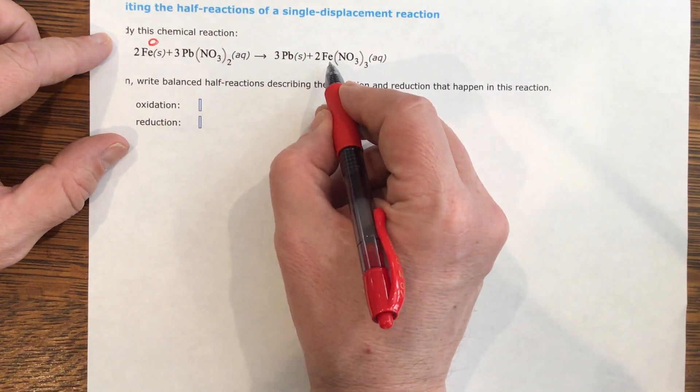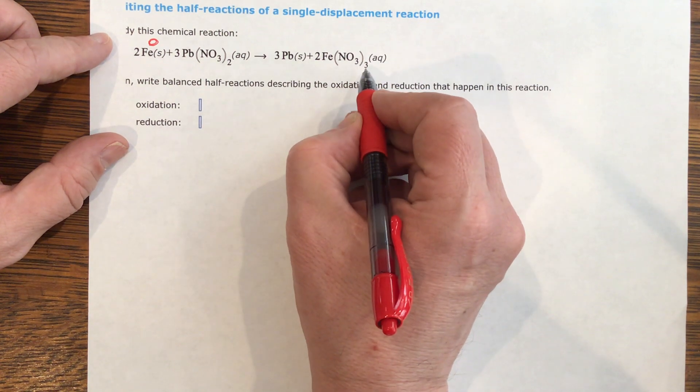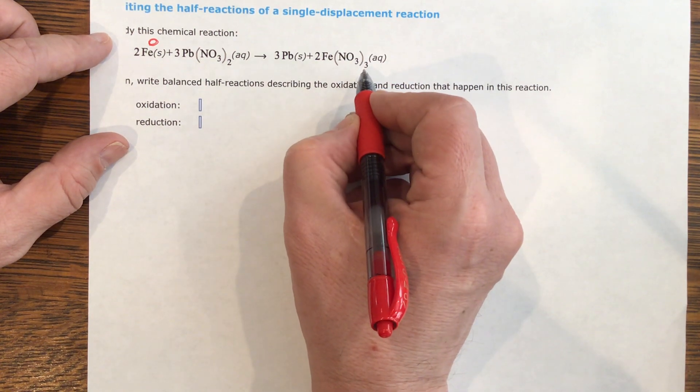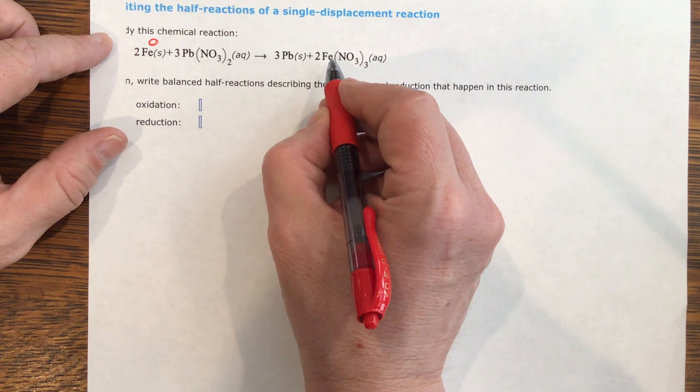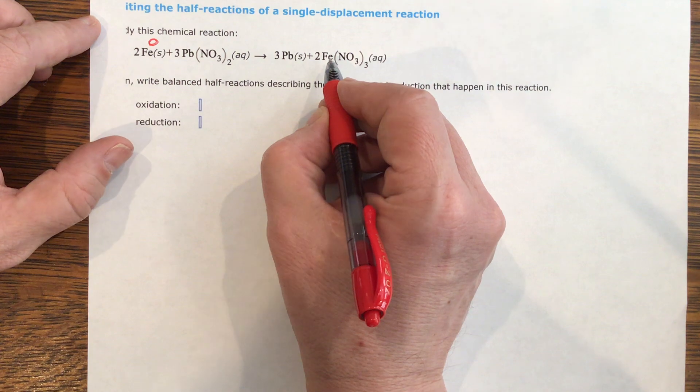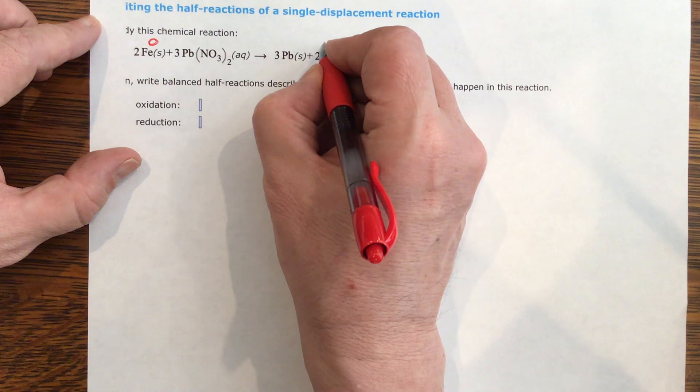When I come over here to the iron, I'm going to see that nitrate, which is negative one, there's three of them. There's three negative ones. That means that this iron has to bind with three negative ones, but be balanced. So this has to be a positive three.